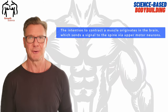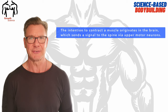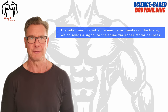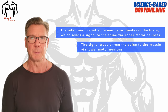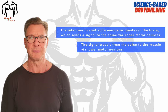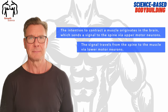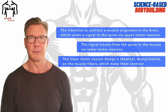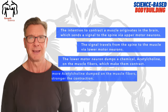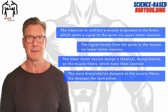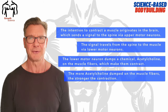To recap: the intention to contract a muscle originates in the brain, which sends a signal through special nerve cells called neurons to the spine. The signal then travels from the spine to the muscle and into the muscle fiber using lower motor neurons. The lower motor neuron dumps the chemical acetylcholine onto the muscle, which makes it contract. And the more acetylcholine that is dumped onto the muscle, the stronger the contraction.